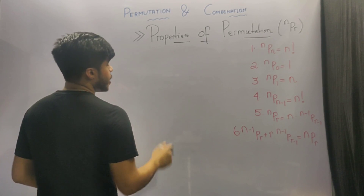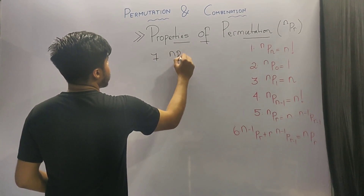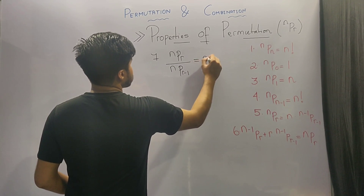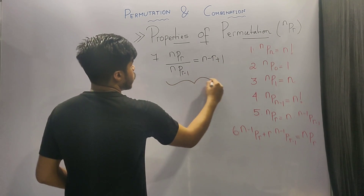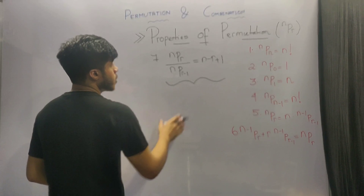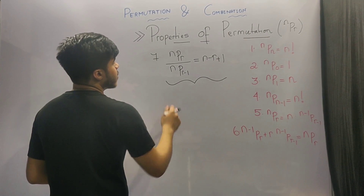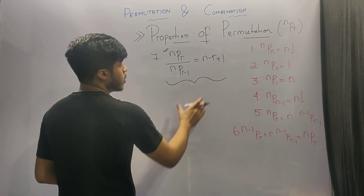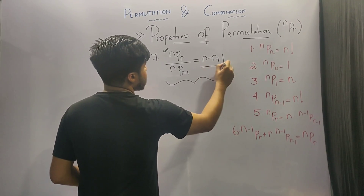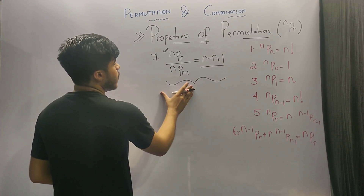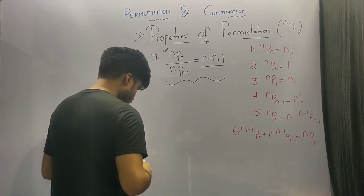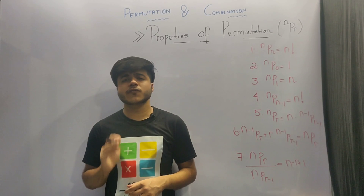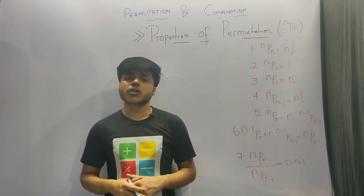The last and final property of permutation is that nPr upon nP(r minus 1) is equal to n minus r plus 1. This is the most important property of permutation because in many questions the final answer is of the form nPr by nP(r minus 1), and knowing this formula lets you simply write the answer as n minus r plus 1 instead of wasting time calculating. You must remember all seven properties.